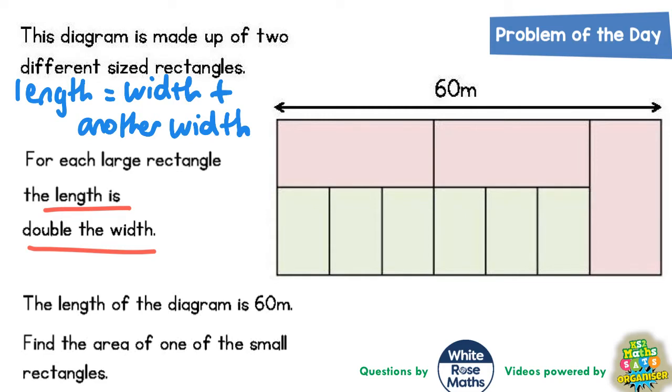It says the length of the diagram is 60 metres. Find the area of one of the small rectangles.